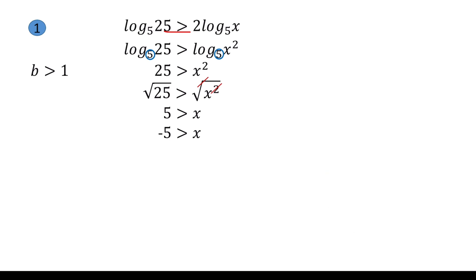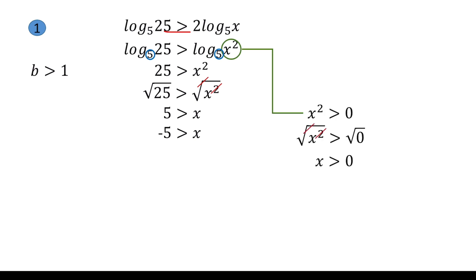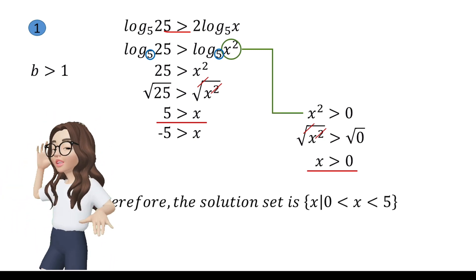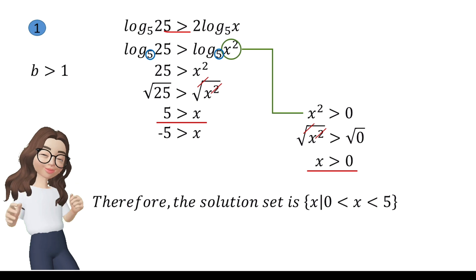The region from negative infinity to −5 is excluded because substituting those values gives an undefined answer. To find the other boundary, take the expression inside the logarithm and set it greater than 0: x² > 0, so x > 0. Therefore, the solution set is x such that x > 0 but x < 5.